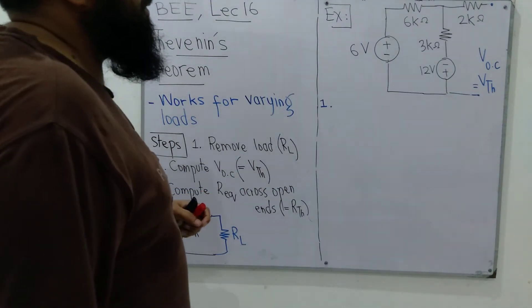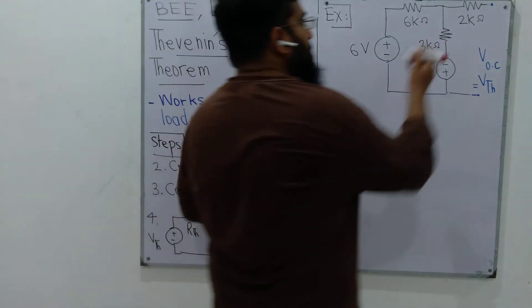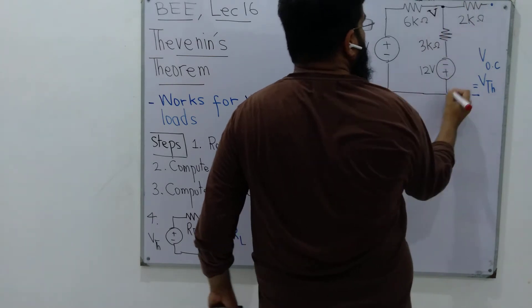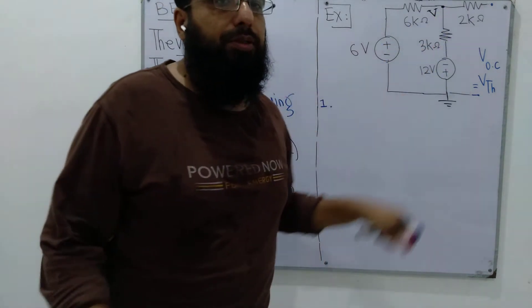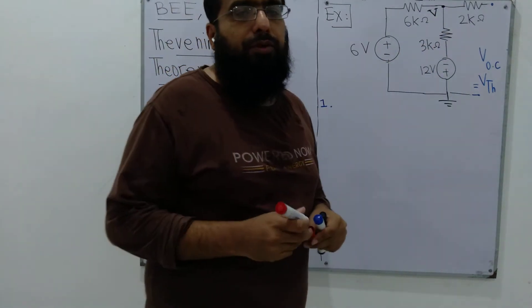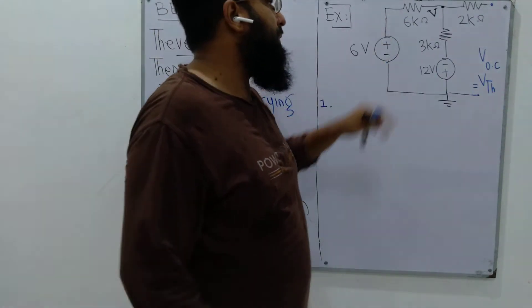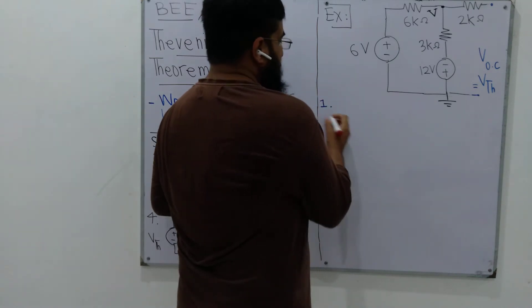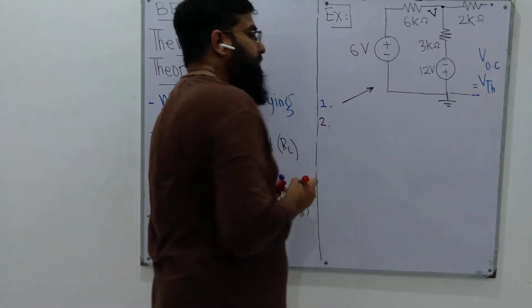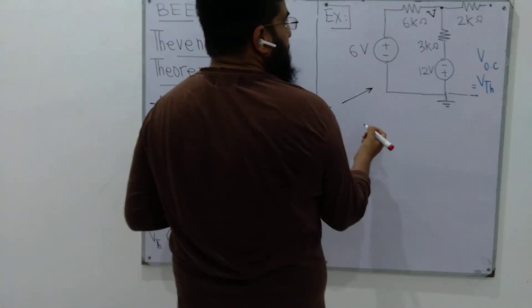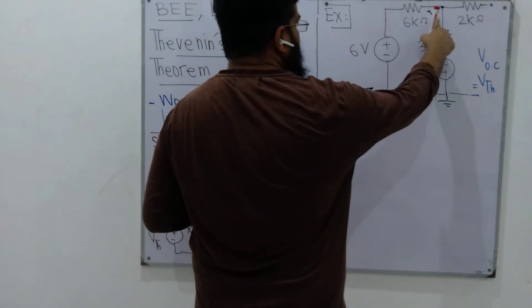This can be computed using many techniques that we have already studied. Let's solve it using nodal analysis. Define a node here and its voltage is V. We have to write the KCL equation for the three branches connected to it. For the leftmost branch the current is step number 2.